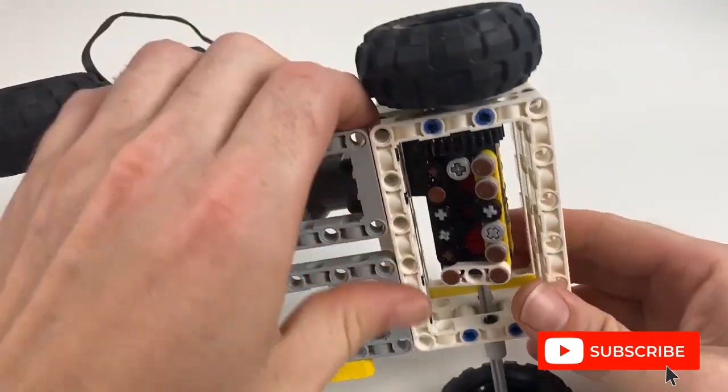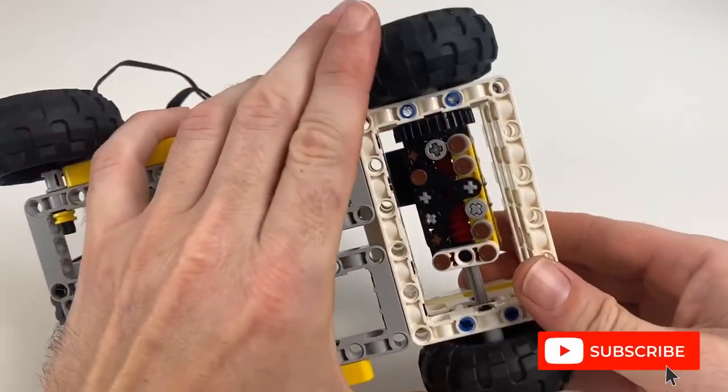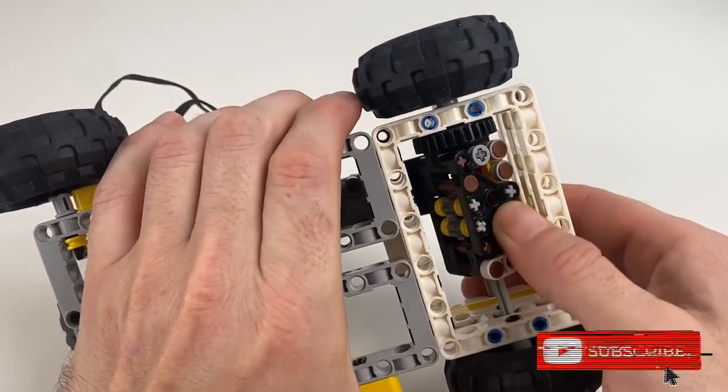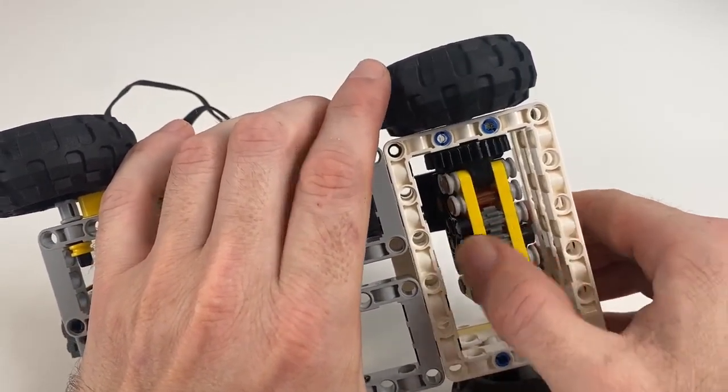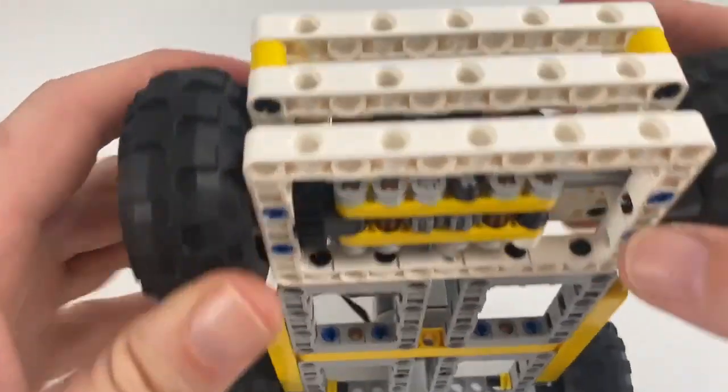But here we've got an example of having that stuck between two frames. Because these axles are actually removable, it is possible to put this through the frame itself and have it more securely located.